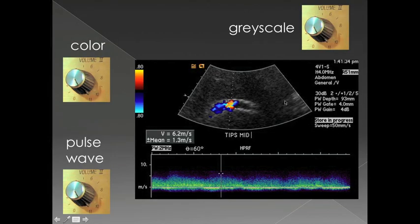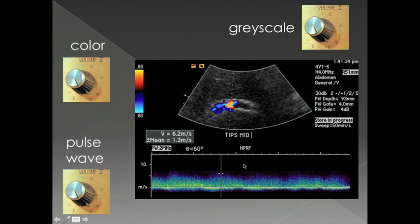When you add the complexity of pulse wave or spectral Doppler, you add another additional gain. For this particular image you can see the grayscale image with color Doppler overlaid, and down here you have the spectral waveform tracing. Each one of these different portions of the image comes with its own volume knob. The gain is set pretty well here — you don't see very much background noise, it's nice and black, and you can see the spectral waveform clearly.